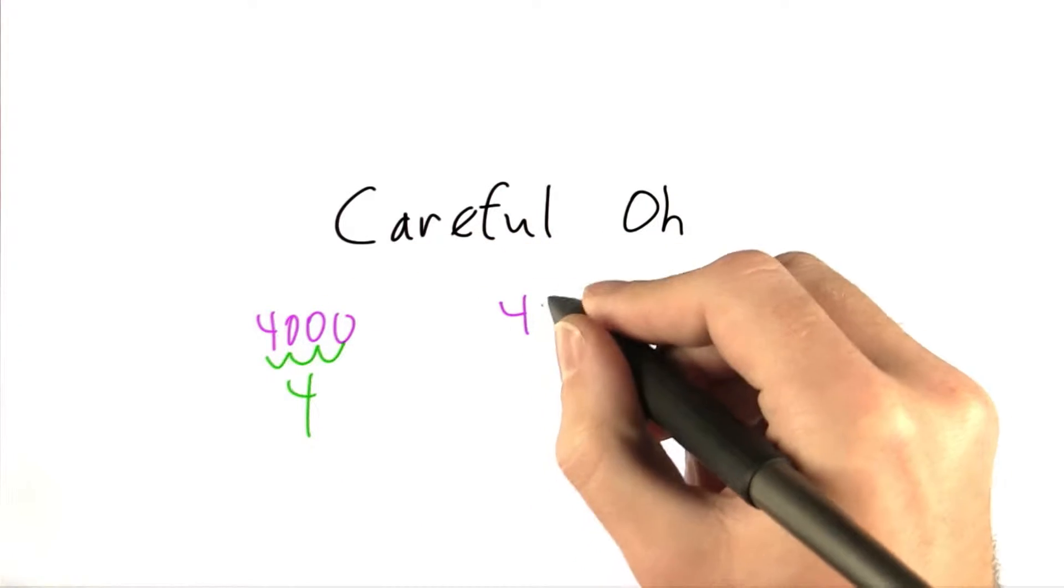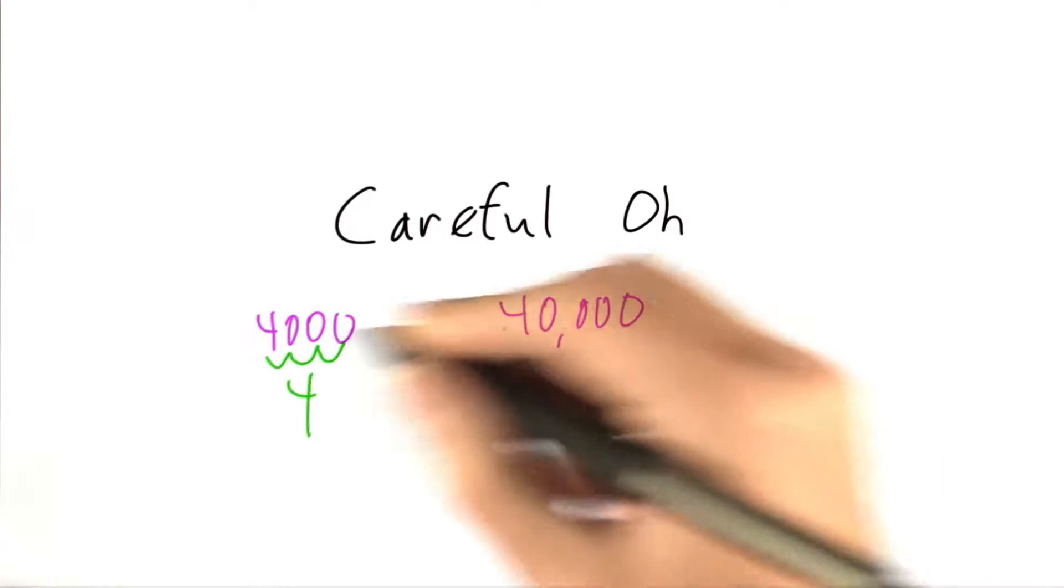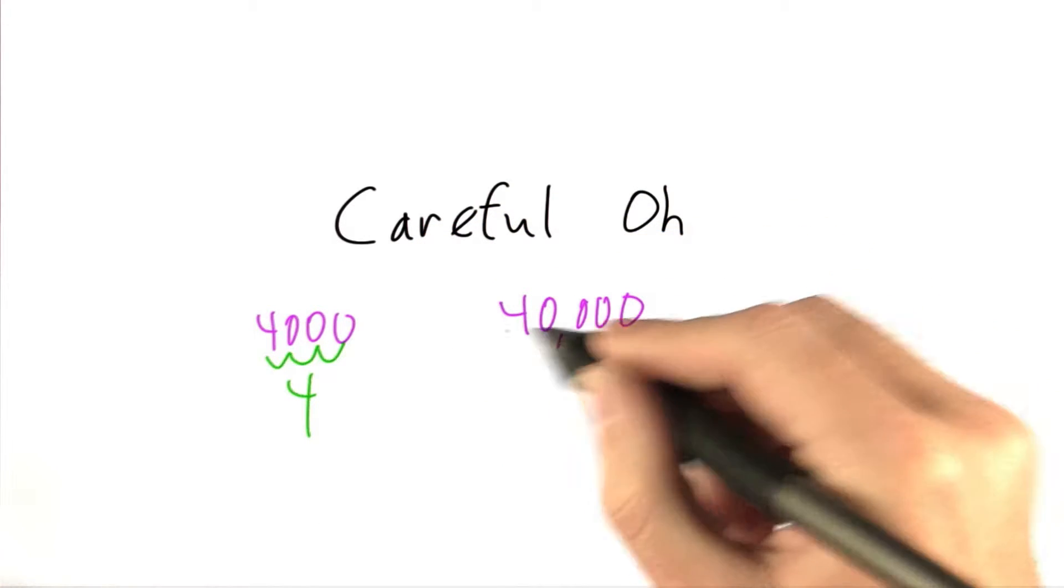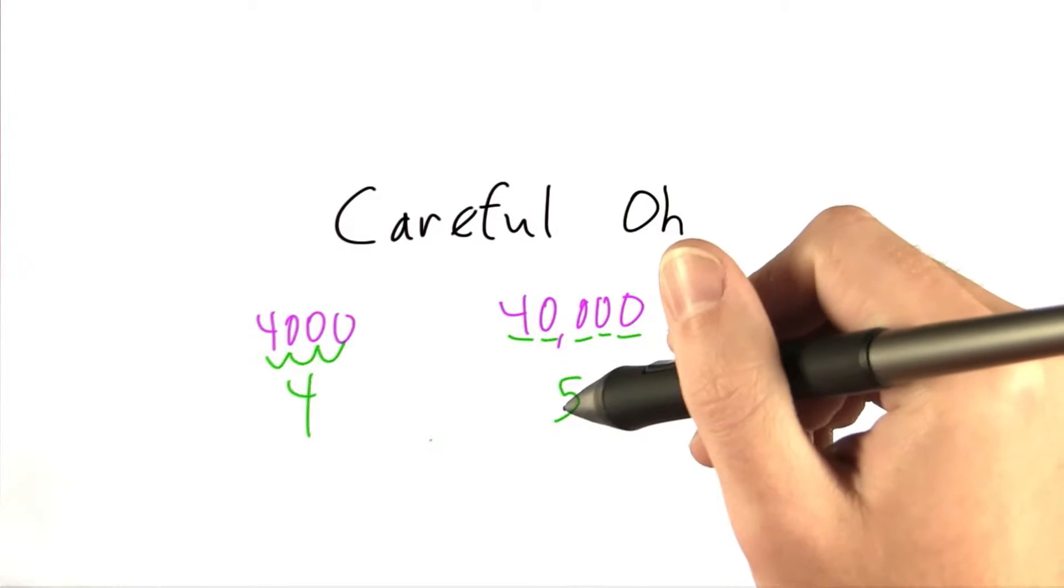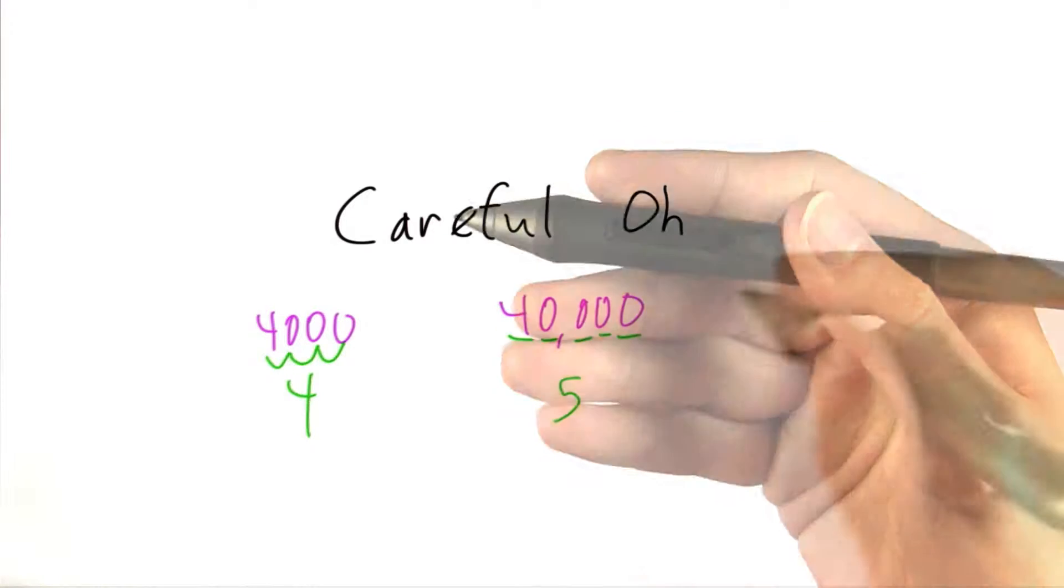Similarly, if we wanted to write down 40,000, which is 10 times as big as 4,000, we only need to write down 5 digits. So the number of digits is growing logarithmically with the size of the number that we want to represent.